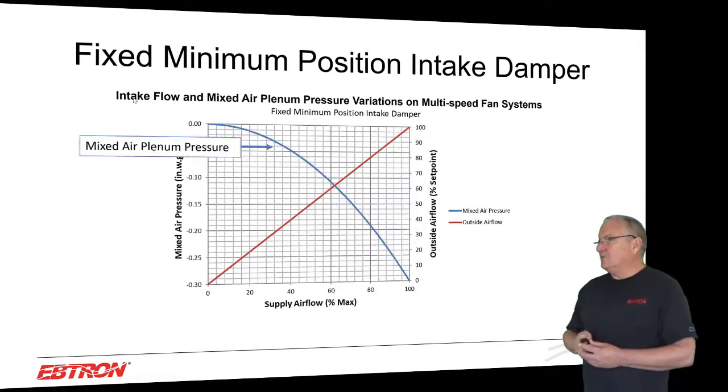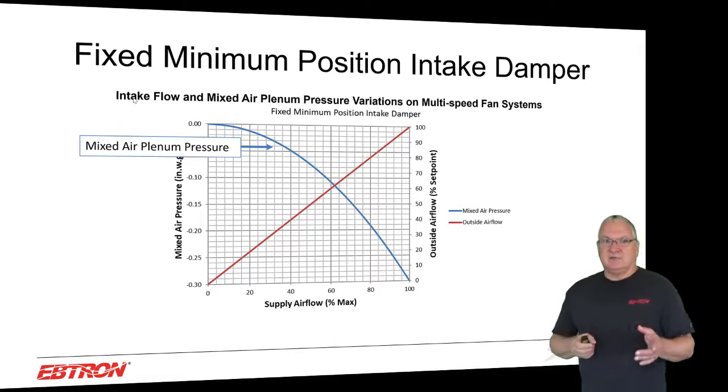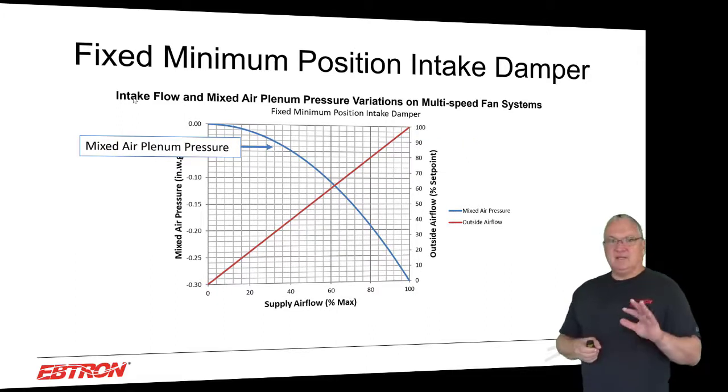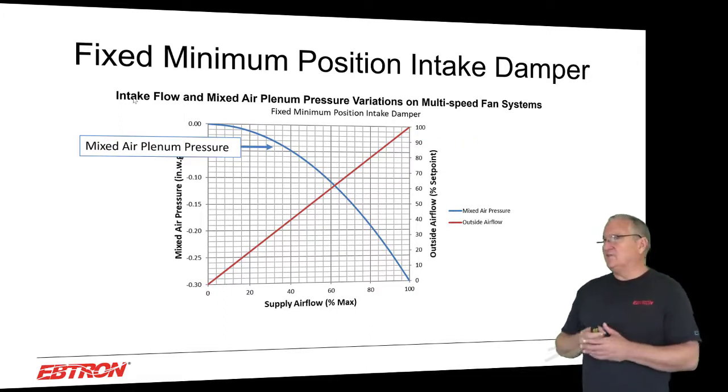In this example — and it is example-specific — the pressure drop across the louver or hood and the intake damper at its fixed position gives us a certain pressure drop at design or 100% intake flow rate.